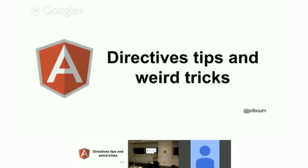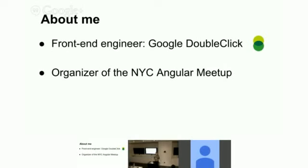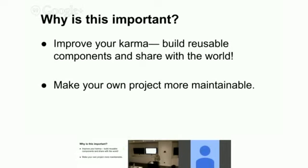So, Directive Tips and Weird Tricks. My name is Jeremy. I'm a front-end engineer on Google DoubleClick, and also one of the organizers for this meetup. Why are these tips important? One, you're going to want to improve your karma — build reusable components and share them with the world. When you create things to share with others, you benefit the community, and that community in turn benefits you. When you build really good components, you get even more karma, and it also makes your own project more maintainable.